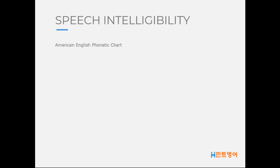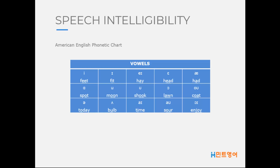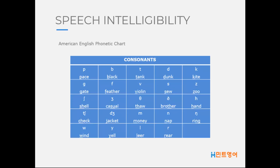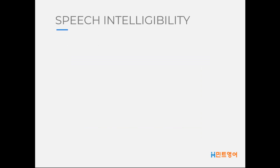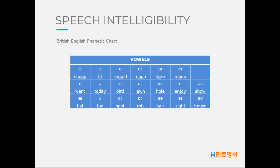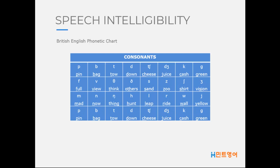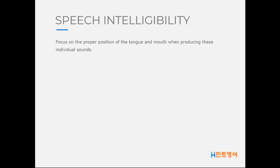Here is a list of American English phonetics along with their corresponding symbols and examples. In American English phonetics there are 15 vowel sounds and 24 consonant sounds. In British English there are 20 vowel sounds and 24 consonant sounds. Focus on the proper position of the tongue and mouth when producing these individual sounds. Keep practicing making these sounds until you are comfortable pronouncing them.